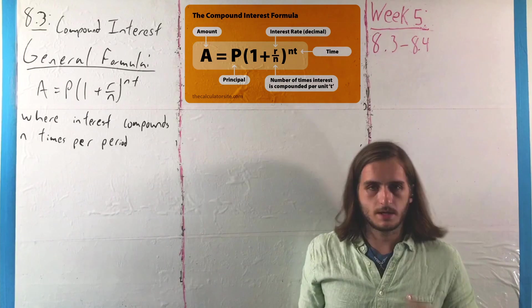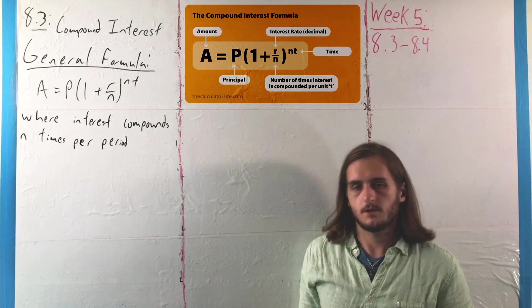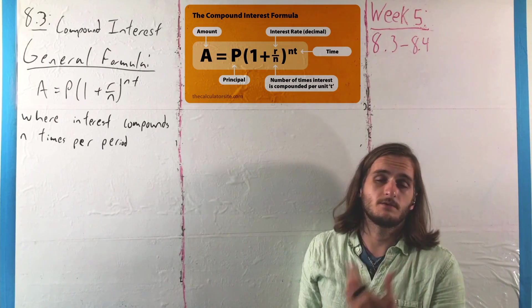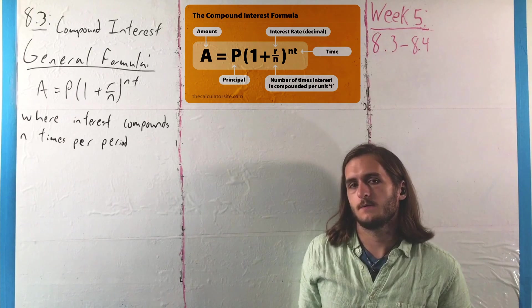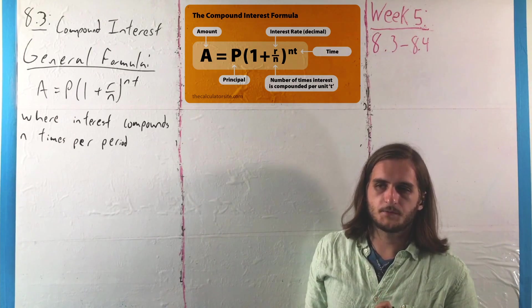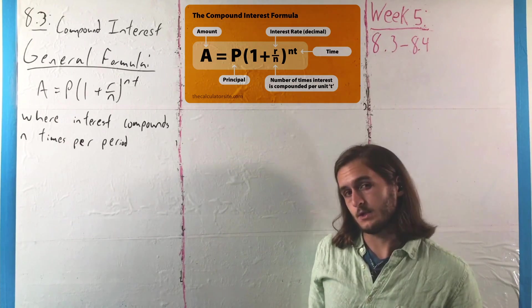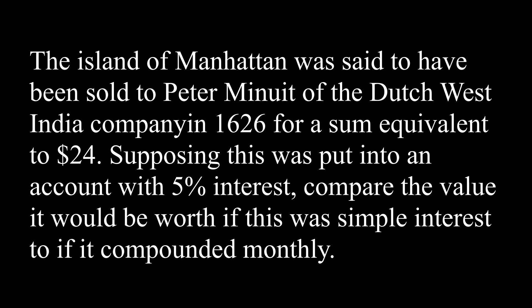And again, we've got a lot of numbers, a lot of symbols to chase around here, but I think it'll make a little more sense if we see this in the context of the example. In particular, this is an example with a bit of historical weight to it. The island of Manhattan was said to have been sold to Peter Minuet of the Dutch West India Company in 1626 for a sum equivalent to $24. Supposing this was put into an account with 5% interest, compare the value it would be worth if this was simple interest to if the interest compounded monthly.